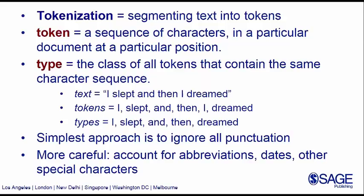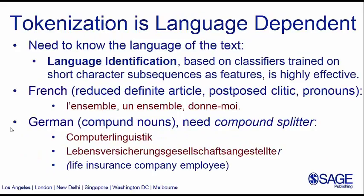Tokenization is also language dependent. If we build a tokenization tool for English, there are certain rules to observe. But if we move to another language — and many interesting social science problems cross different languages — we need tools specific to those languages. For French, there is the elided definite article with specific punctuation. Even more challenging is German, where we need a compound splitter to make sense of individual words within compounds.